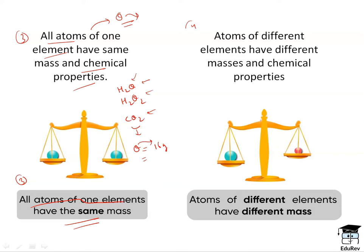The fourth postulate was: atoms of different elements have different mass and chemical properties. While the third postulate stated that the same elements have the same mass, the fourth postulate states that different elements have different mass. For example, hydrogen has a mass of 1 gram, oxygen has a mass of 16 grams, and carbon has a mass of 12 grams. These are all different elements with different masses and different chemical properties.